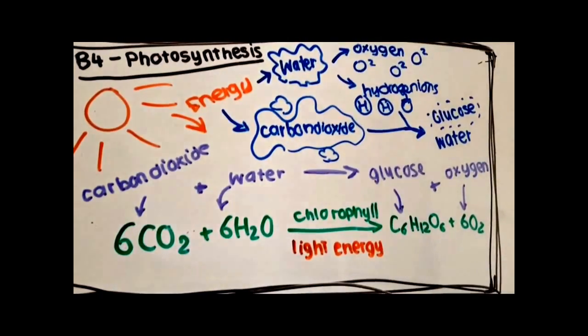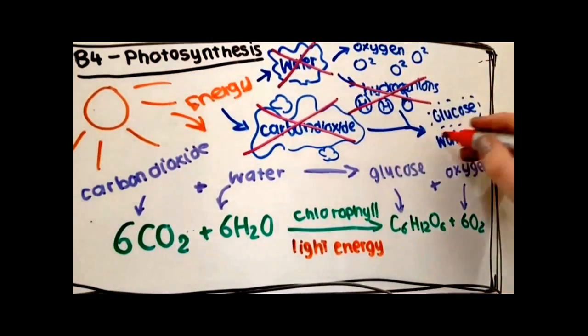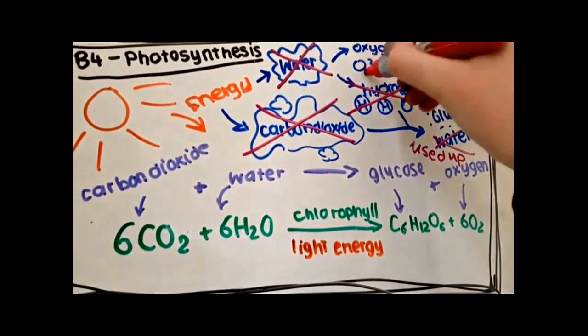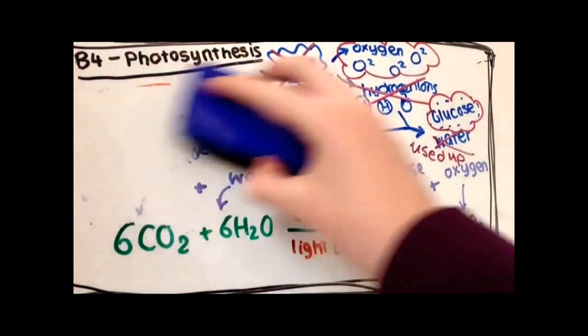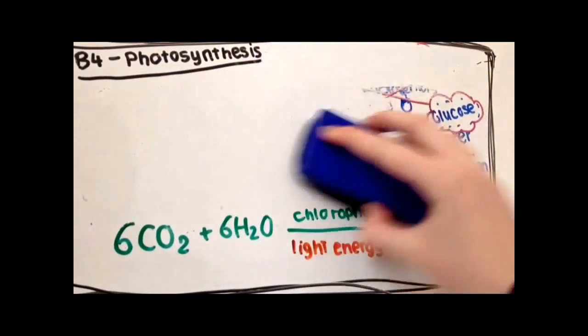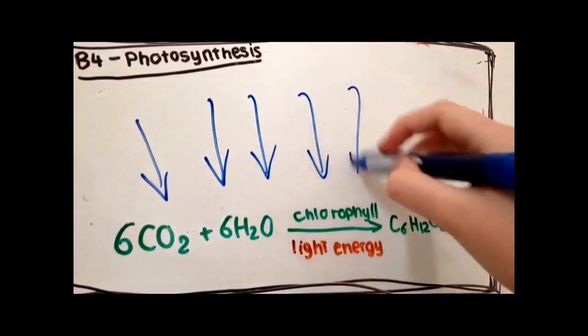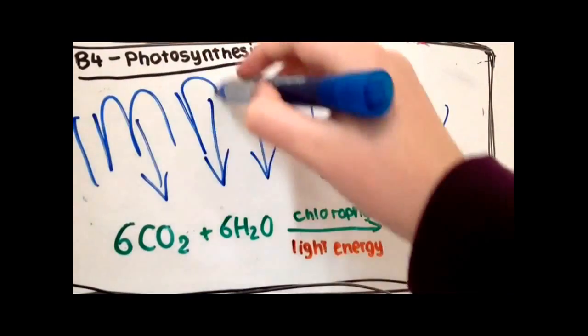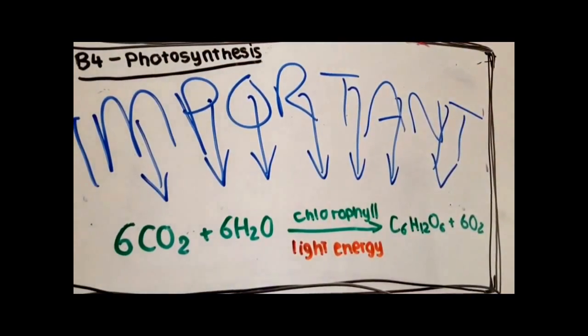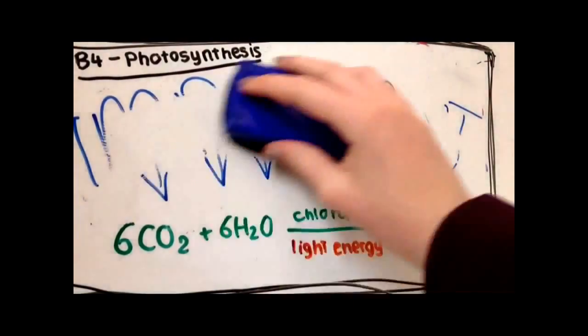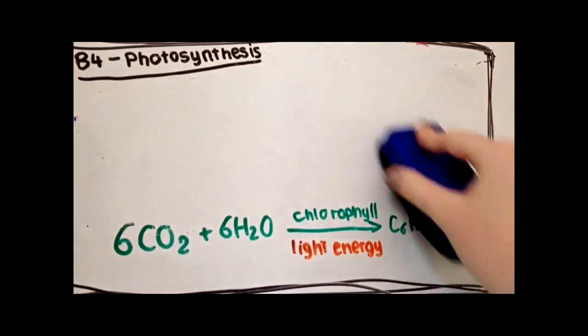However, water isn't one of the end products. Now cancelling out the ones that have been used, we are left with oxygen and glucose which is at the end of the word equation. 6CO2 plus 6H2O makes C6H12O6 plus 6O2.